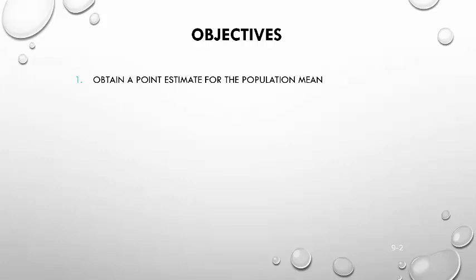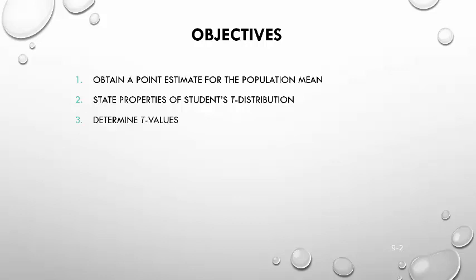The first objective is how you obtain a point estimate for a population mean — it's actually quite simple. The next one will be to state the properties of the Student t-distribution. This is a new statistical table we've never seen before. It's a lot like the normal distribution table in that you look values up on it, but how you get those values is a little different. We'll also talk about how you determine t-values or how you use that statistical table. When we come together in class this week, we'll actually talk about the concept of confidence intervals in general, but this first part is just helping us get there.